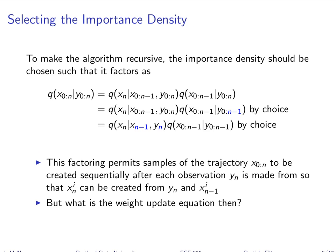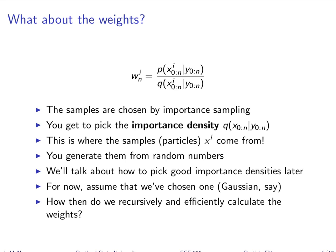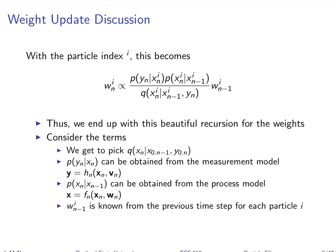All we've got is parameters. One often overlooked thing is that the importance density is partitioned in such a way that you can draw samples recursively — you don't have to go back and redraw sample trajectories from scratch. After going through the math, we found a nice recursion for the weights: the weight at time n equals the weight at the previous time sample for that particular particle trajectory, multiplied by the likelihood.